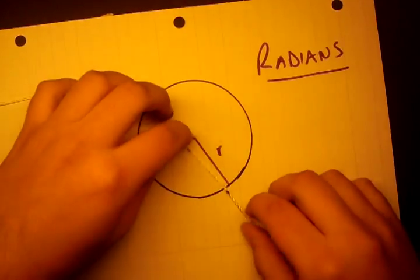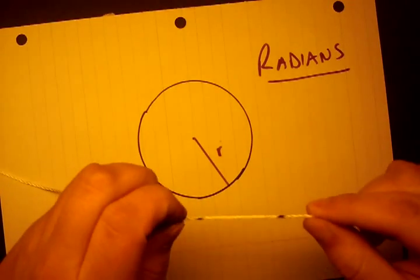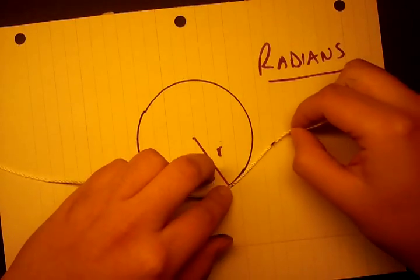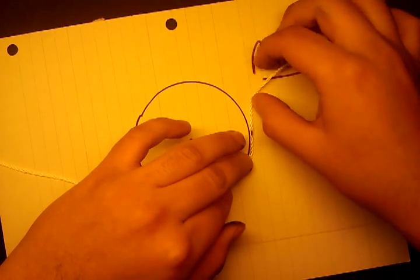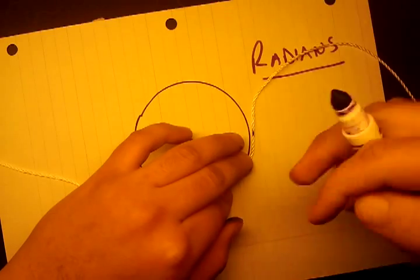Now, we're going to do a little experiment. We're going to see how many times we can wrap this around the circle and see how many radii that is. So we're going to mark it as we go. It's going to be an approximation.